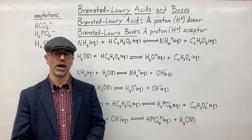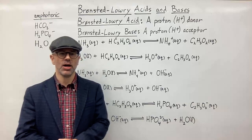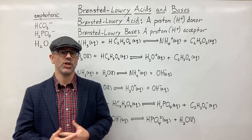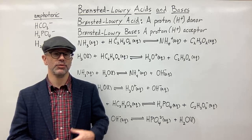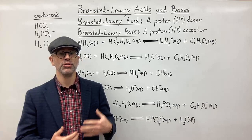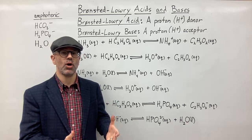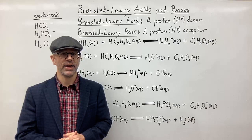The first thing I want to talk about is what a Bronsted-Lowry acid and a Bronsted-Lowry base is. When we're talking about the Arrhenius definition of an acid or base, an Arrhenius acid is a substance that when you put it in water, it's going to produce H3O+ or hydronium ions. But if a substance produces OH- or hydroxide ions in water, then it's going to be an Arrhenius base.